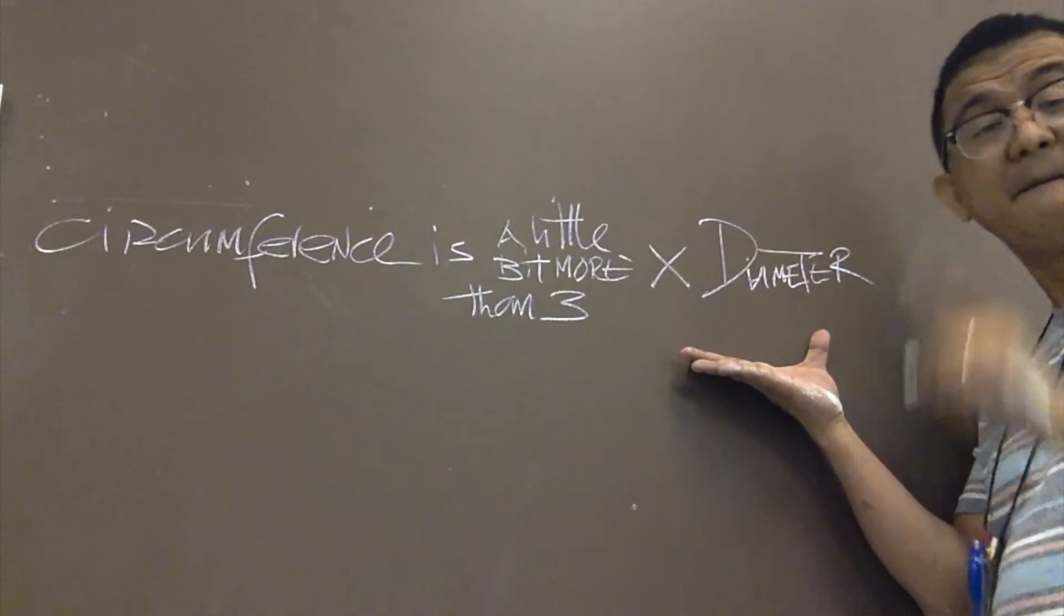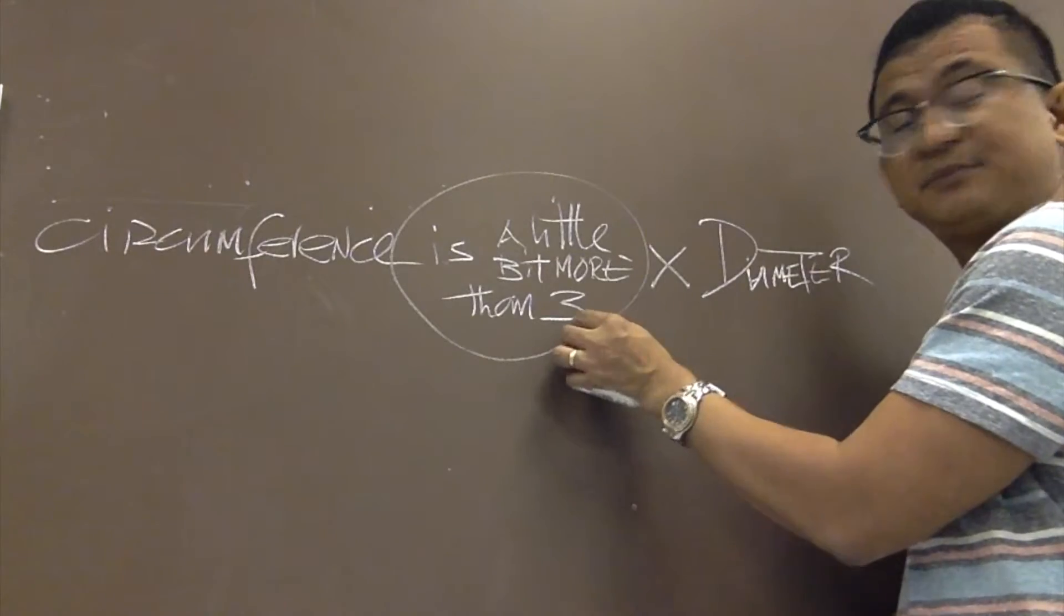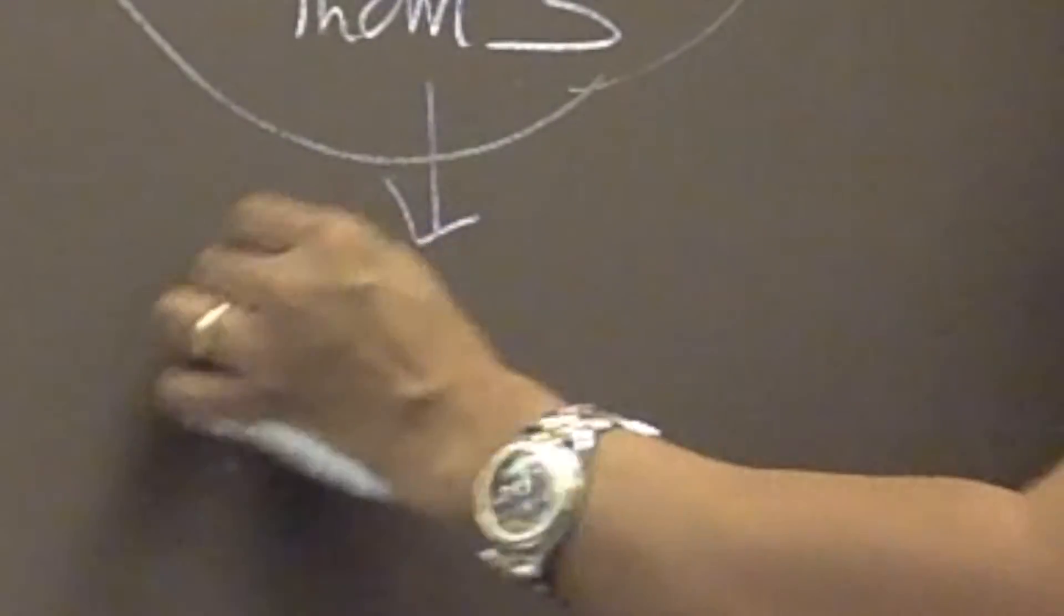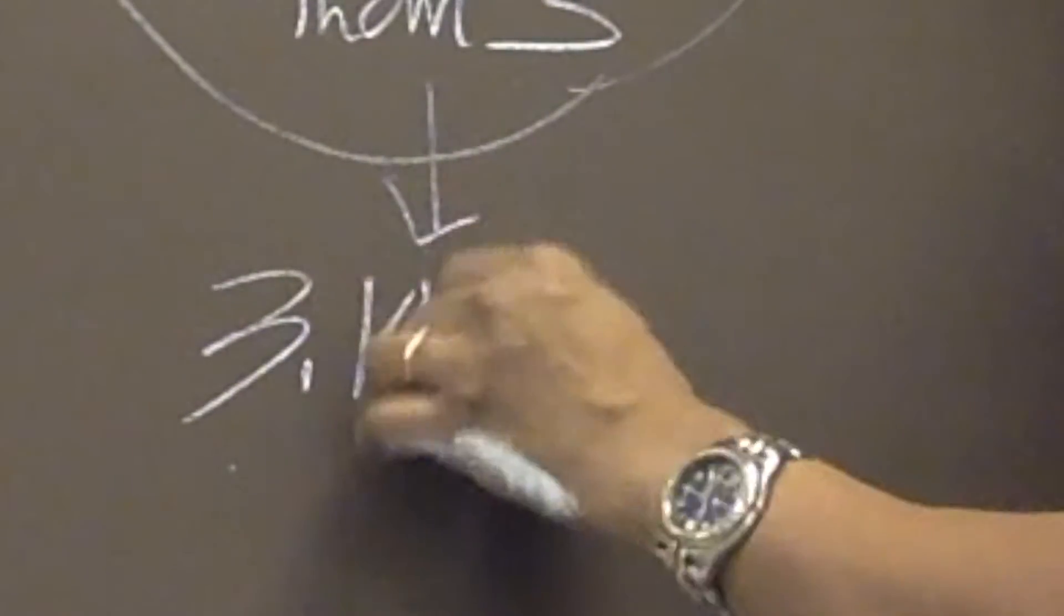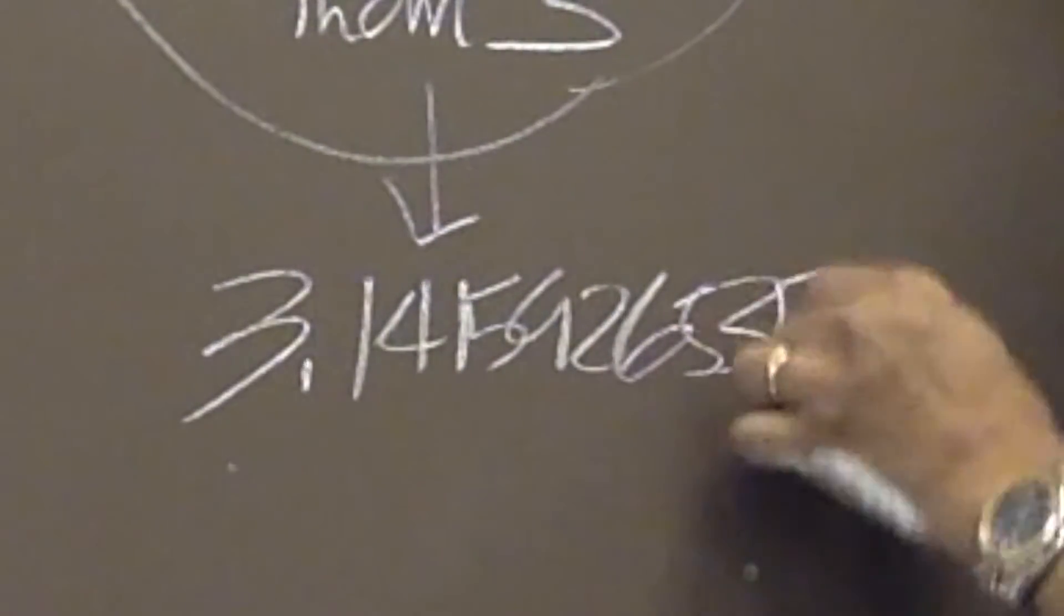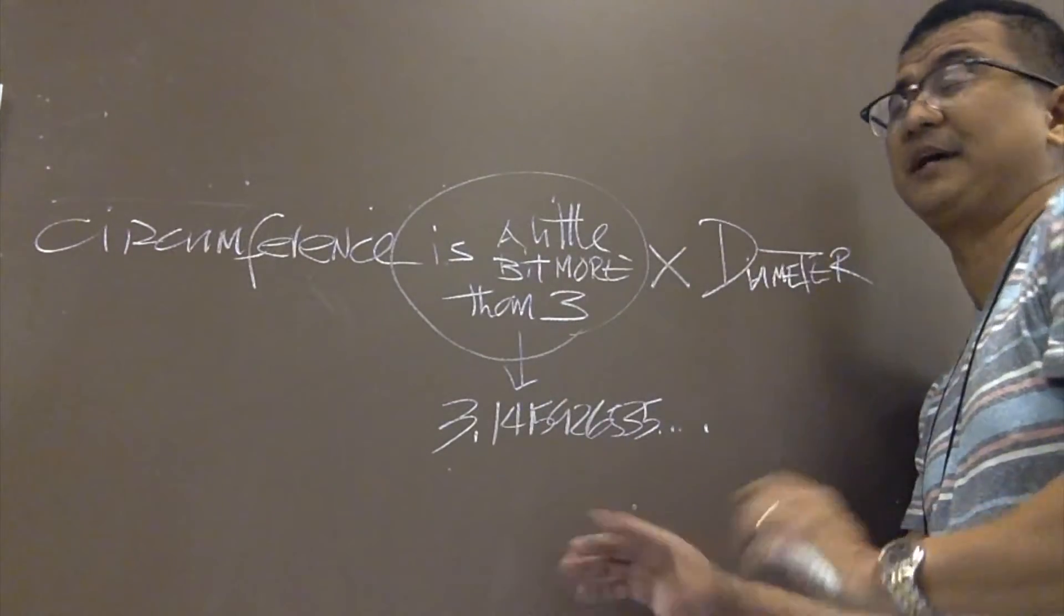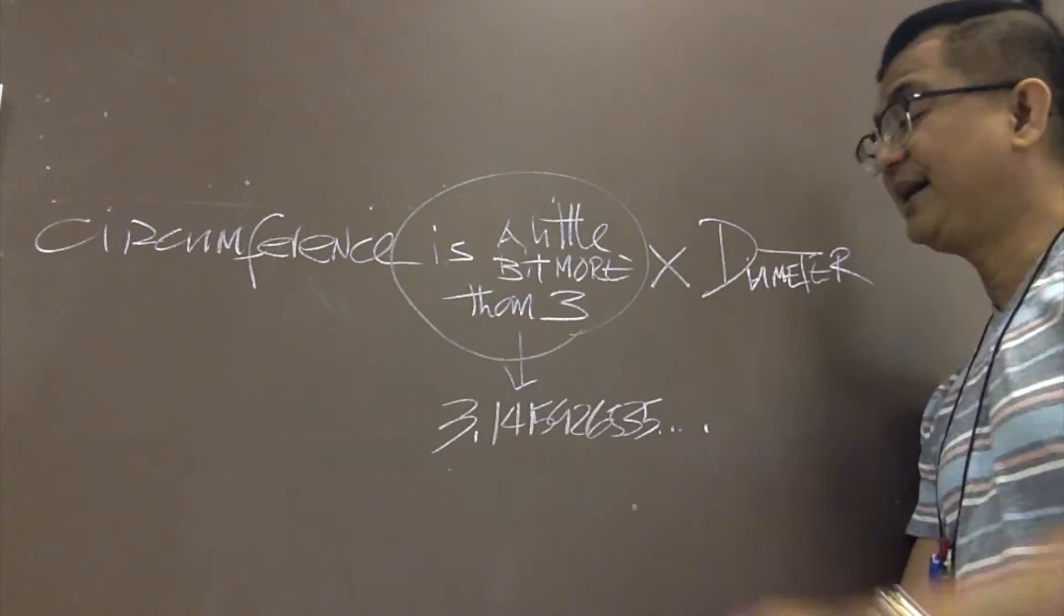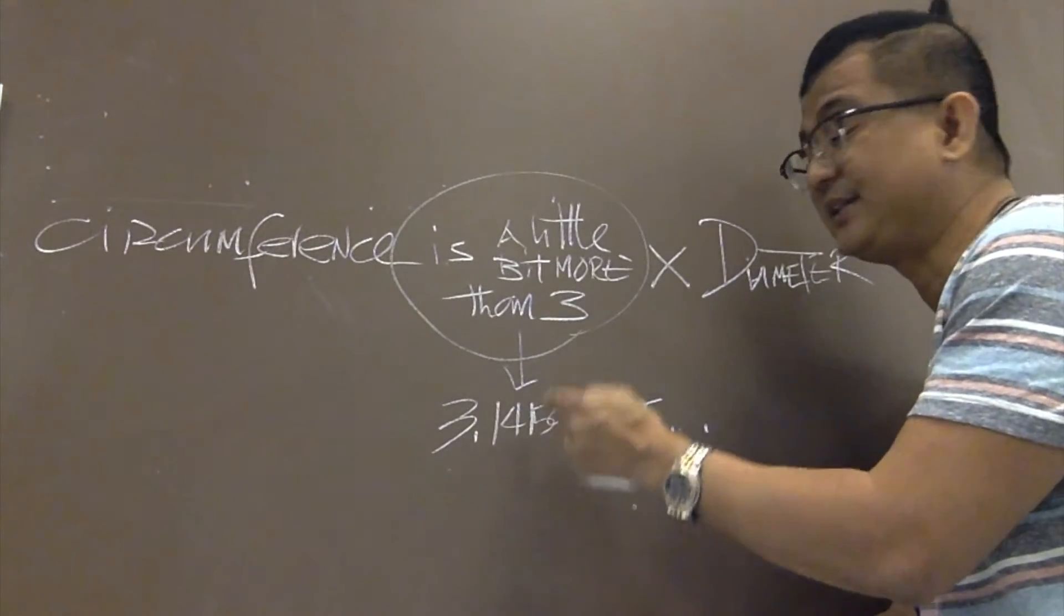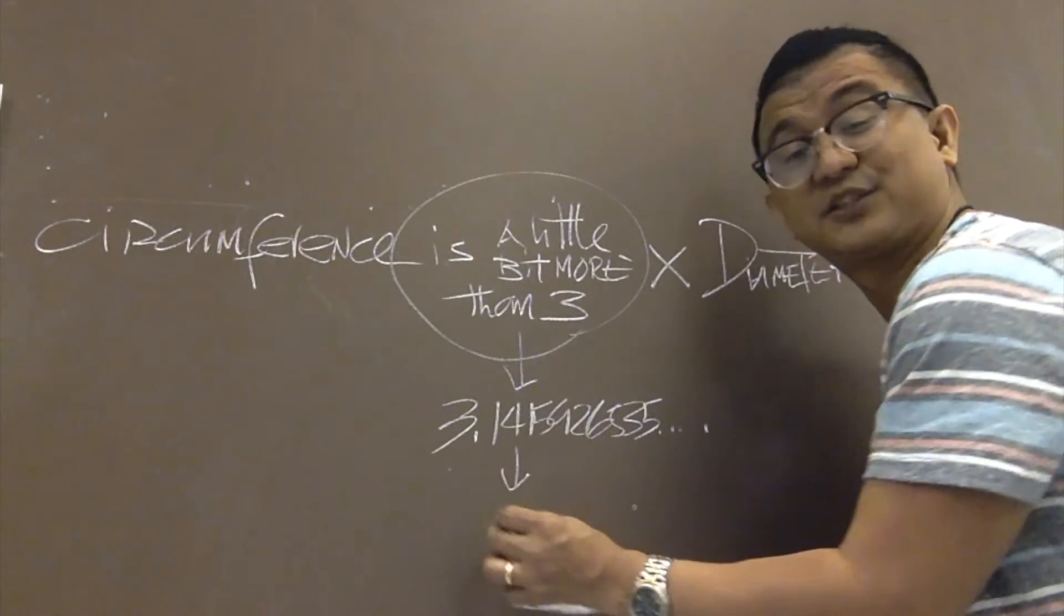But technically, that a little bit more than three times is 3.1415926535 dot dot dot. Mathematicians all over the world measured all the circles and they got this ratio and they agreed on this. This is the ratio they use.